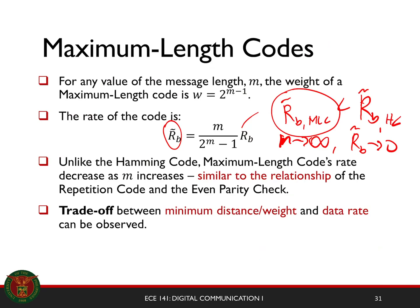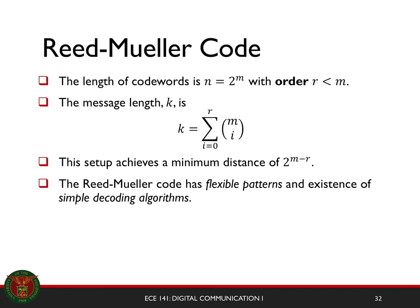It seems that there's always a trade-off between the minimum distance and the data rate. If you want a more reliable code, you need to sacrifice some data rate. But if you're limited to some spectral efficiency, then you might want to consider using a code that is not maximally reliable but reliable enough. When there's an engineering problem, there will always be trade-offs.